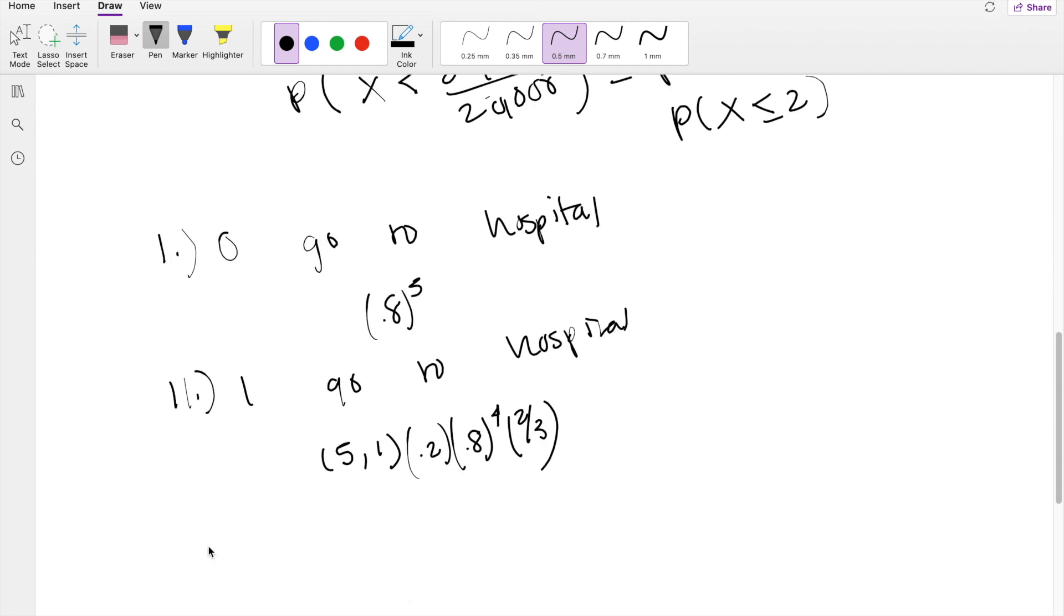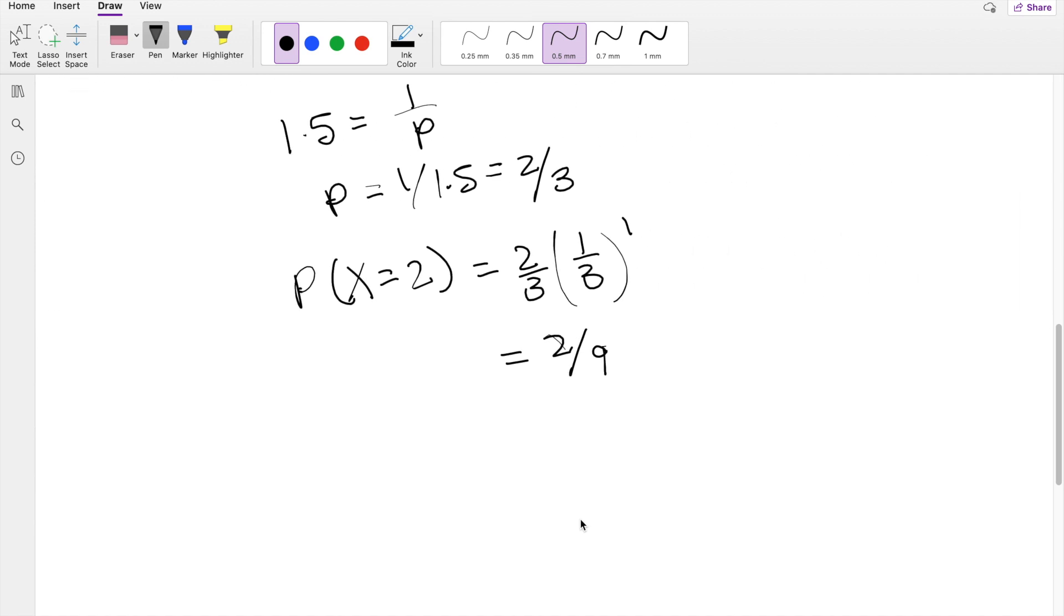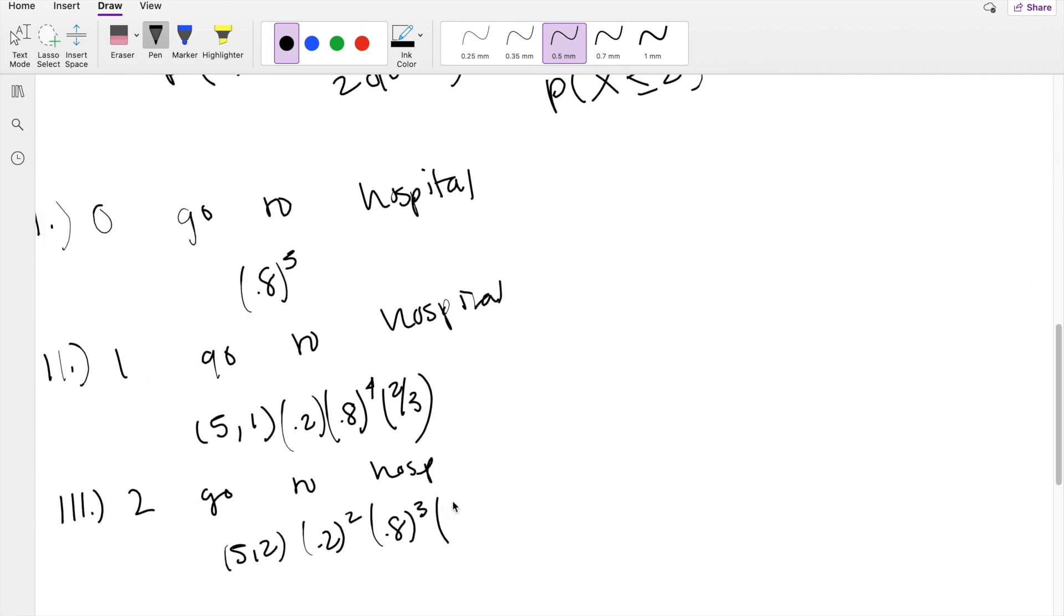And then case number 3 is 2 go to the hospital. In that case, it's going to be 5 choose 2, 0.2 raised to the 2 power. This part is basically Bernoulli's distribution, 0.8 raised to the third. And what is the probability that 2 of them go to the hospital once? That's just 2/3 times 2/3.